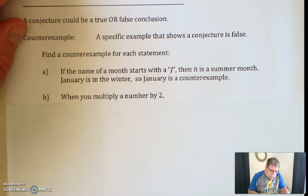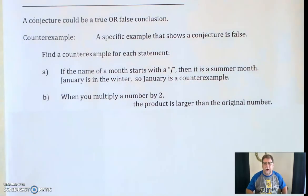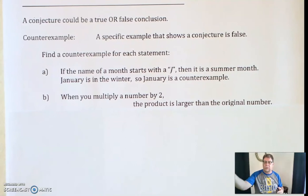Okay. But when you multiply by 2, the product is larger than the original number. Makes perfect sense. Seems like a true statement. You know, multiply 1 times 2, you get a larger number 2. Multiply 2 times 2, you get a larger number 4. 10 times 2 is 20. It's a lot larger.